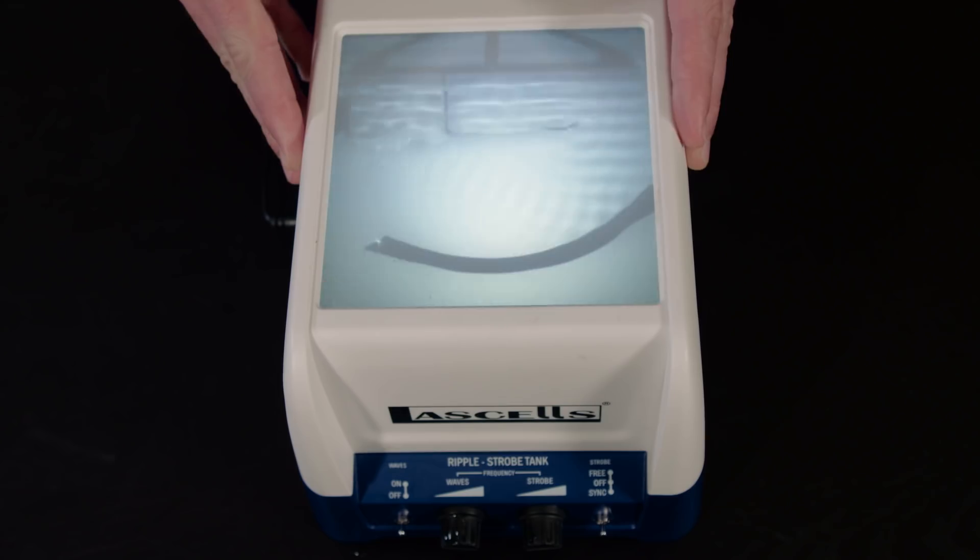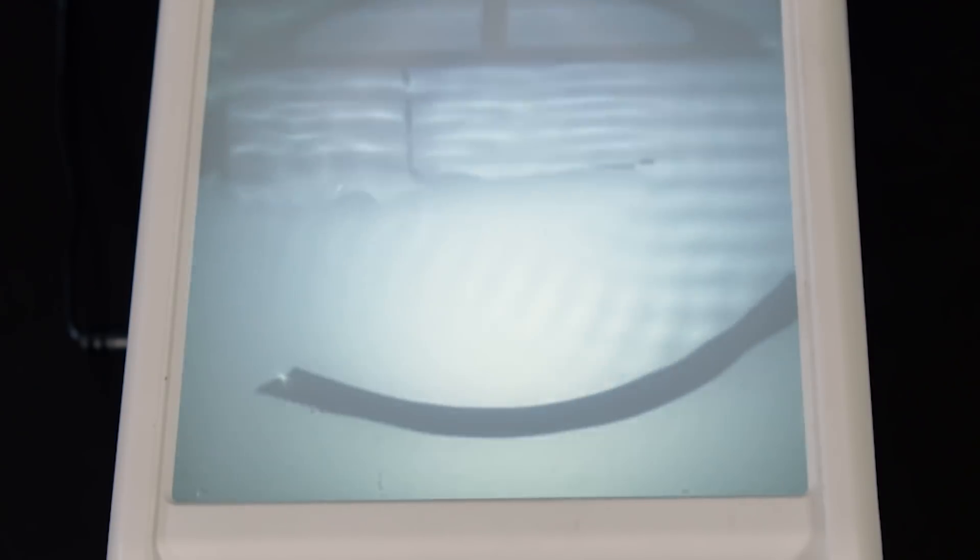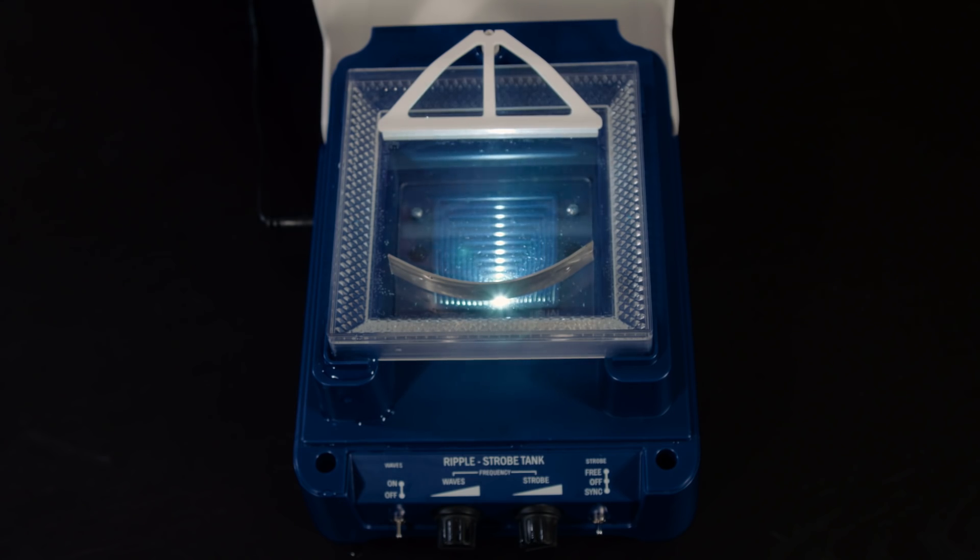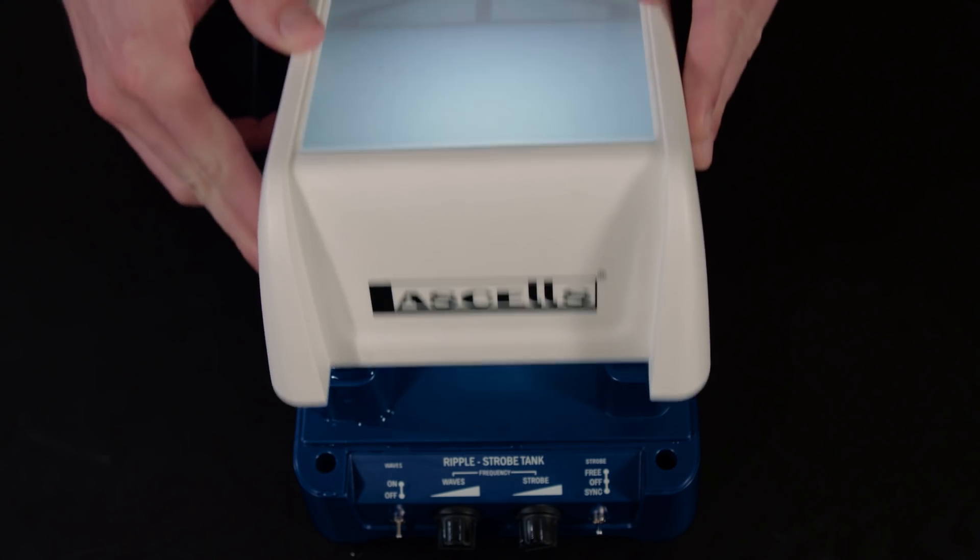Another experiment you can try is reflection. A wave train can be focused to a point using a parabolic mirror, very much like the type in a Newtonian telescope.